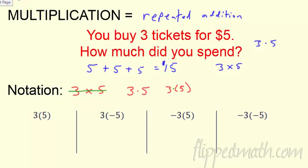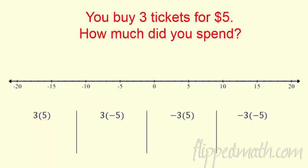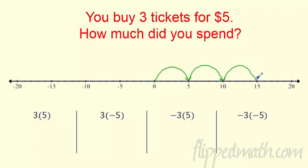We're doing integers, which if you recall are positive and negative numbers. Let's focus on this word problem. If I buy 3 tickets for $5, I'm buying 3 sets of 5 — just timesing by 3. There's $5, there's 5 more dollars — that's repeated addition, plus 5, plus 5, plus 5 — I can see that I have $15. So if you think of 3 sets of 5, you're good to go.